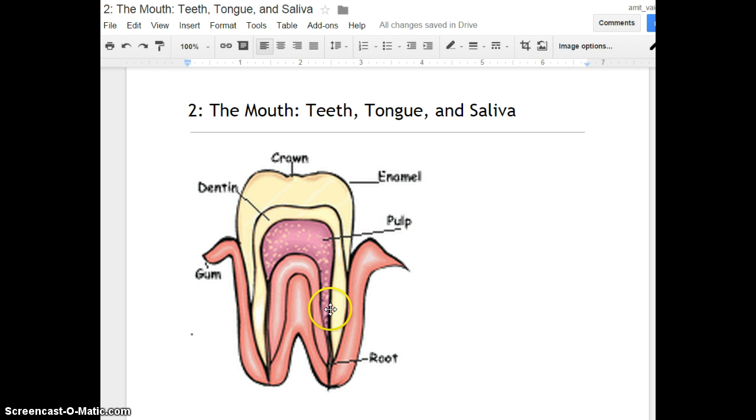And dentin, these are parts of the tooth that are inside the tooth. So I want you to learn from this that the tooth has outer parts, like the crown and the enamel. And it has inner parts, like the dentin, like the pulp and the root.